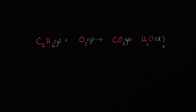Like we've seen in previous examples, this chemical equation is not balanced. How can we tell? On the left-hand side we have two carbons; on the right-hand side we have one. On the left we have six hydrogens; on the right we only have two. On the left we have two oxygens; on the right we have two plus three oxygens. So none of the elements are balanced.